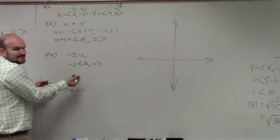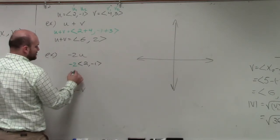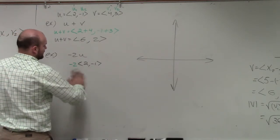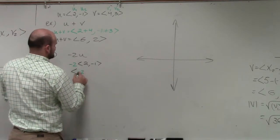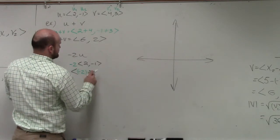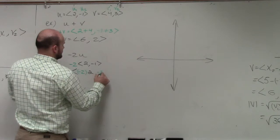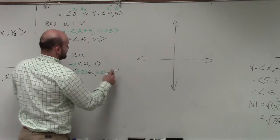Well, just like this is like parentheses, you're applying basically the distributive property. So you're going to have negative 2 times 2 comma negative 2 times negative 1.